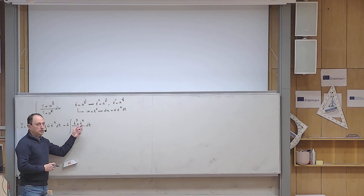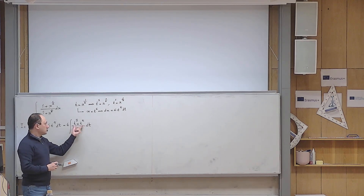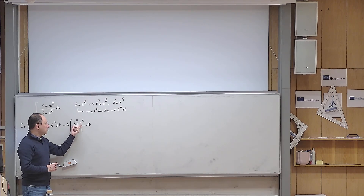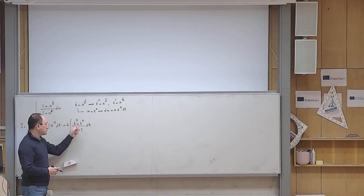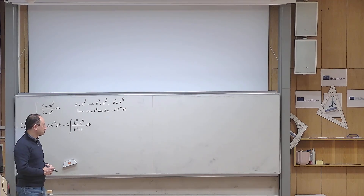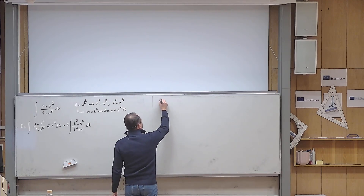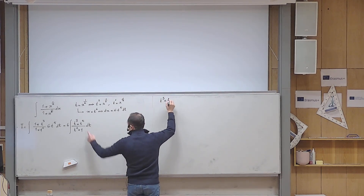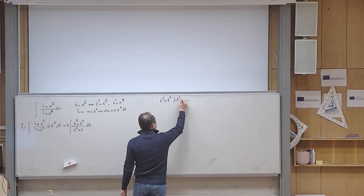So if the problem is simple you can factorize and play around a little bit — and of course you can do it. But if it doesn't come to your mind immediately, the last resort is to use the method of long division and divide the numerator by the denominator. So let us use the method of long division. I write t to the 8 plus t to the power of 5, and then divide by t to the power of 2 plus 1.